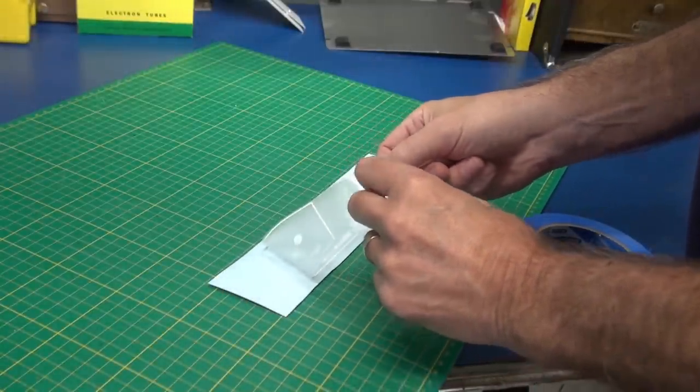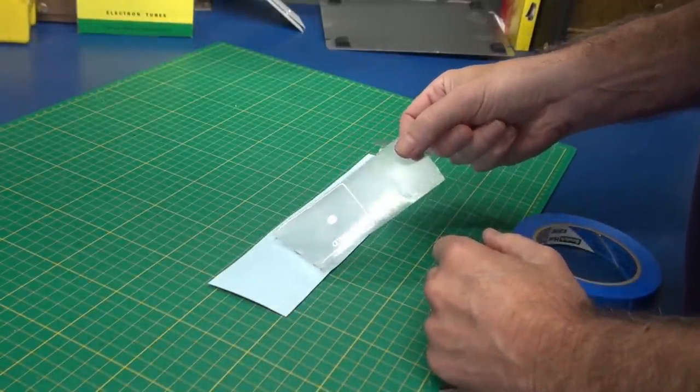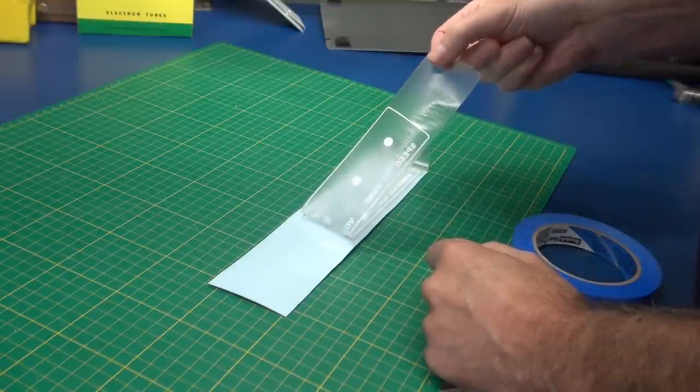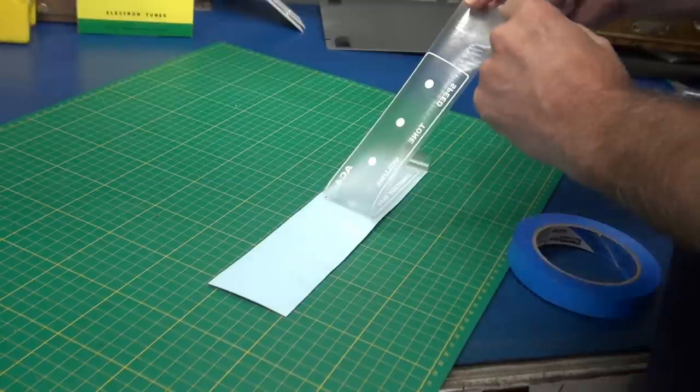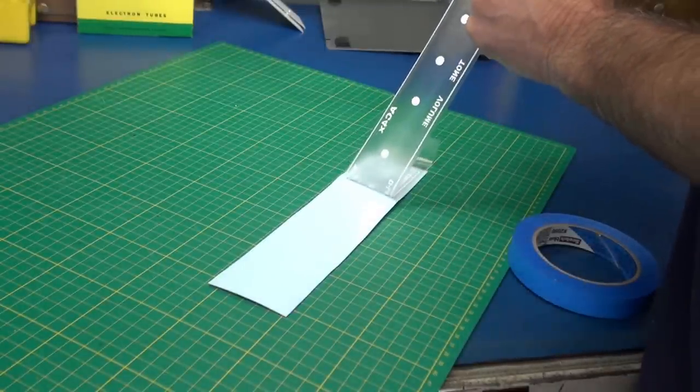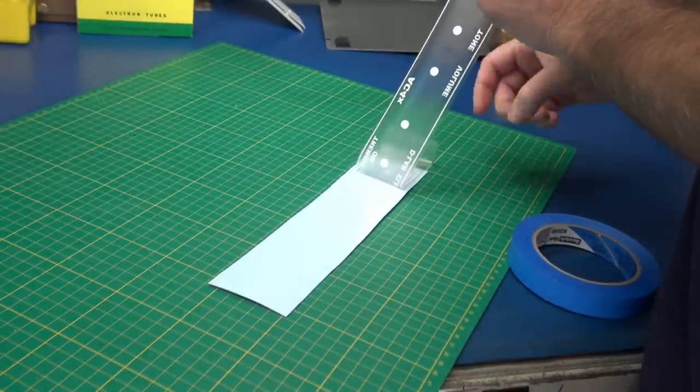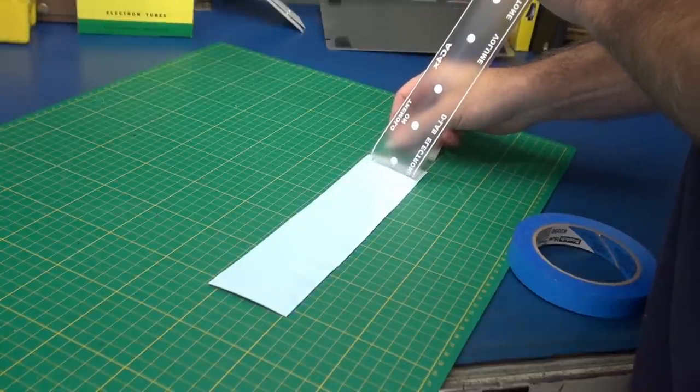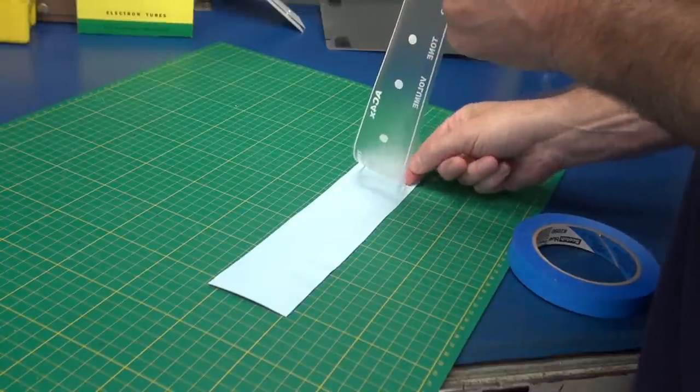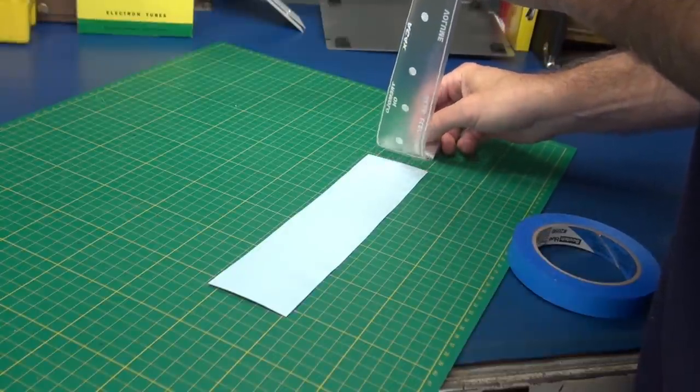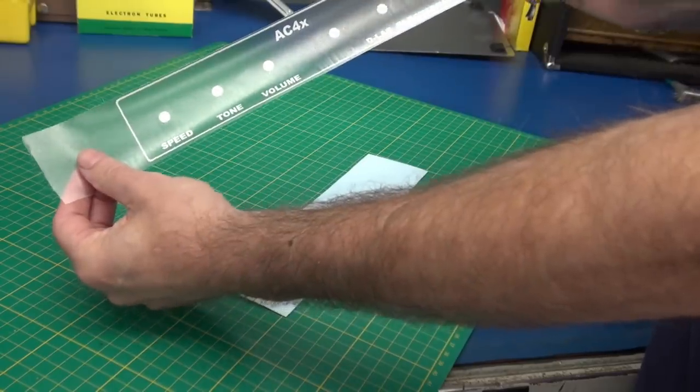Here we go. Lifting off all the lettering in the artwork as you can see. Nice and slow. And if something sticks you can just lay the transfer back down and rub it a little bit more. Like right there. And there we have it.